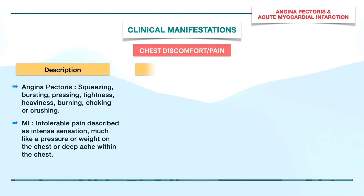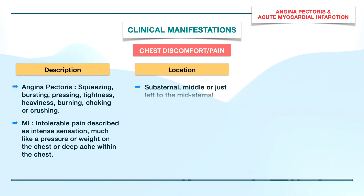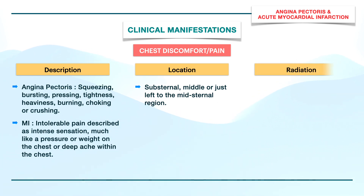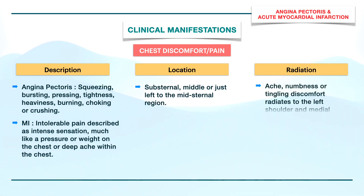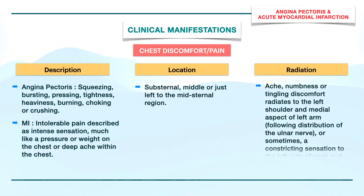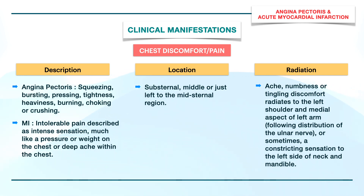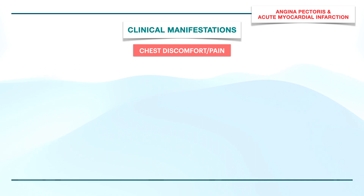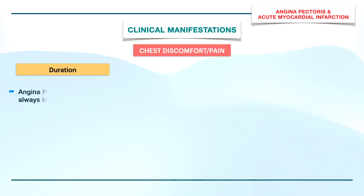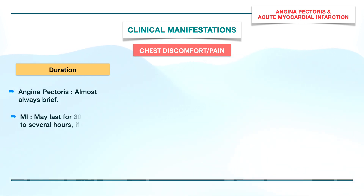The pain is located sub-sternally, in the middle or just left of the mid-sternal region. It radiates as ache, numbness, or tingling discomfort to the left shoulder and medial aspect of the left arm following the distribution of the ulnar nerve, or sometimes as a constricting sensation to the left side of the neck and mandible. The duration of discomfort in angina is almost always brief, while in MI it may last 30 minutes to several hours if untreated.